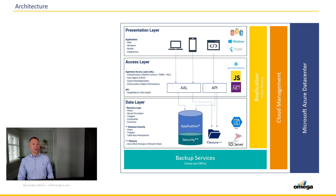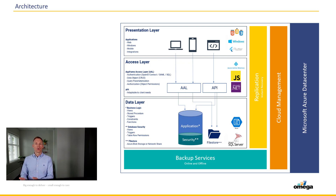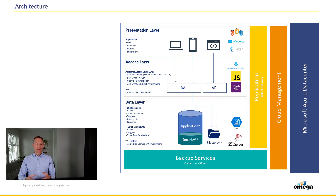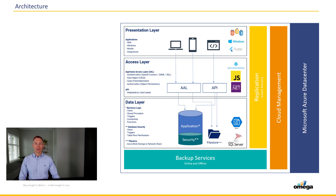In our architecture there are three layers: data layer, access layer, and presentation layer. In the data layer it's Microsoft SQL Server and file store in Blob or file share. Security in AppFrame is implemented in the data layer so your applications can change — whether it's an integration, Windows application, web application, or mobile application accessing the data — and you know the same security is being applied. There is also a security layer in the access layer covering authentication and authorization.